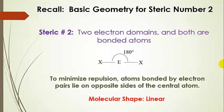Just to remind ourselves — we've already talked about this — for steric number two, the bond angle is 180 degrees. The bonded atoms are 180 degrees apart; that's as far as they can get away from each other. We call this a linear molecule.